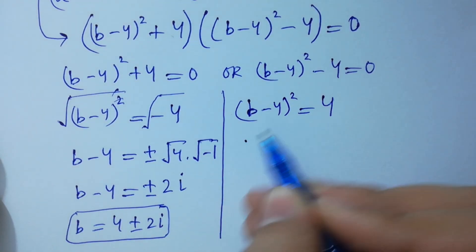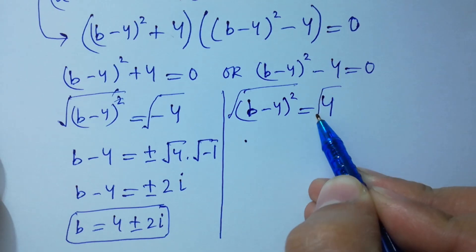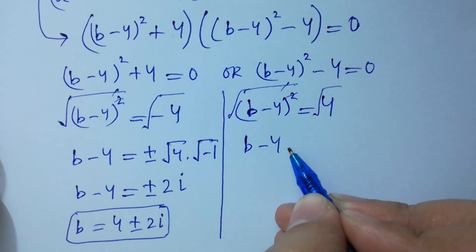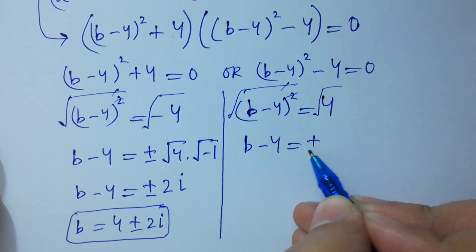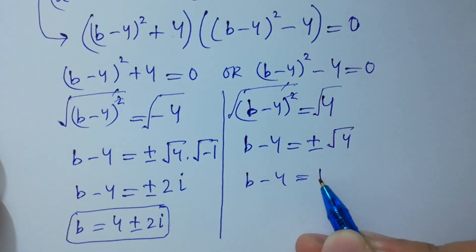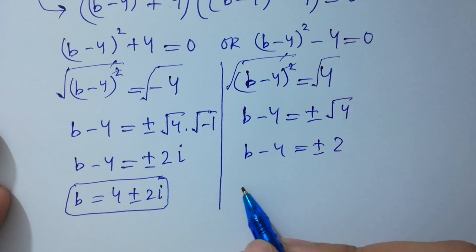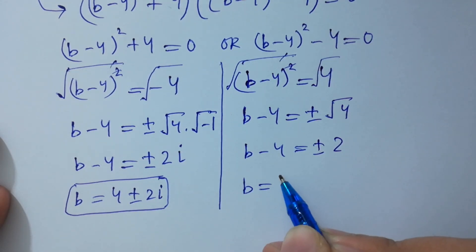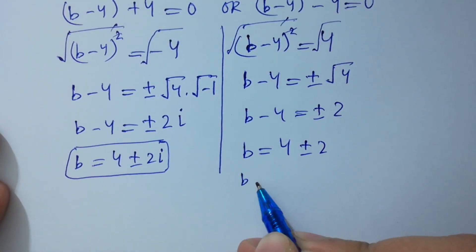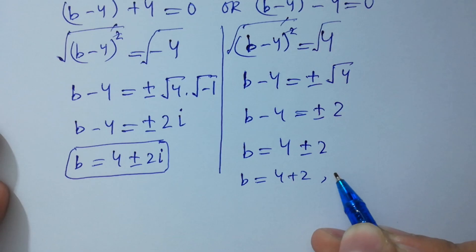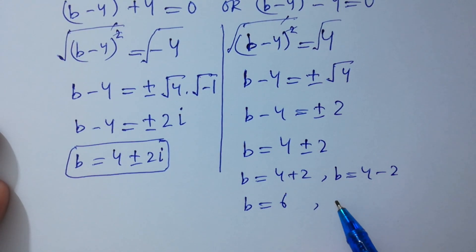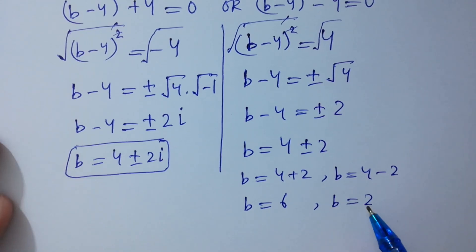Taking the square root on both sides, the square is cancelled: b-4 = ±√4, so b-4 = ±2. Therefore b = 4 ± 2, giving b = 4+2 = 6 or b = 4-2 = 2.